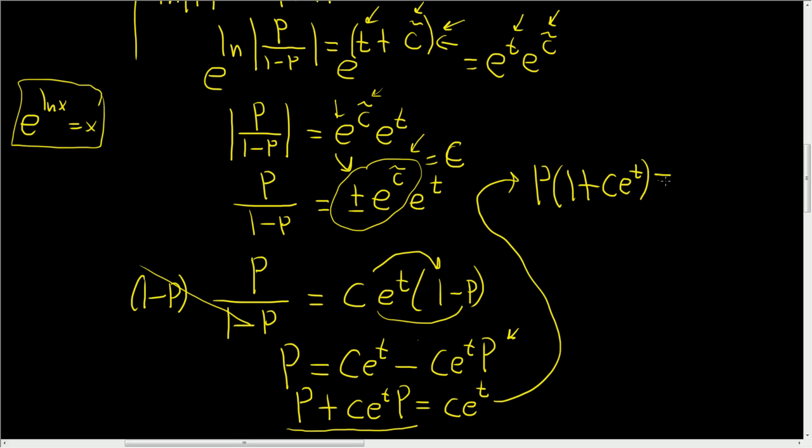So now we can factor out a p here. So this is p and then 1 plus c e to the t. And this is equal to c e to the t. And then dividing by 1 plus c e to the t, 1 plus c e to the t, we end up with the final answer of p is equal to c e to the t over 1 plus c e to the t.